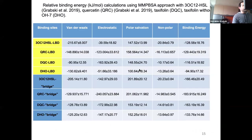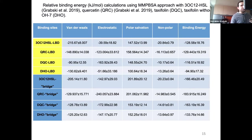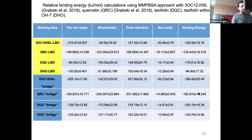We also calculated the relative binding energy to get a quantitative idea. These values correspond to our previous papers. As you can see, quercetin and taxifolin have almost the same binding energy, but both are higher than the native auto-inducer that activates the molecule. We can use quercetin and taxifolin for the second binding site via a non-competitive inhibition mechanism.